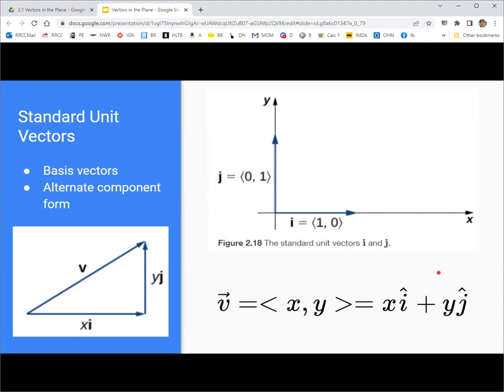Now the unit vectors pointing in the positive x and positive y directions are special vectors, sometimes referred to as basis vectors, and there's special symbols used for them. i is the one that points in the x direction, j in the y direction. Later on, we have three dimensions, we'll have k pointing in the z direction. This gives us another way to represent a vector in component form. Instead of writing the components inside brackets, we can write the components in front of i and j. So first component times i and second component times j.